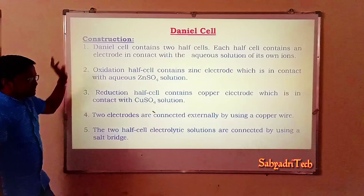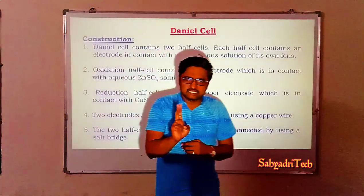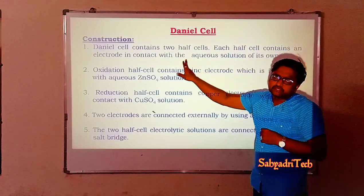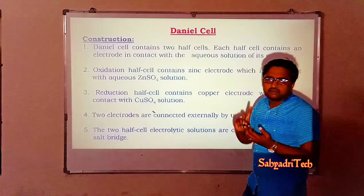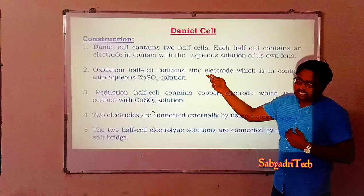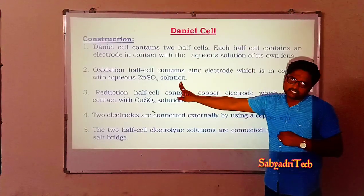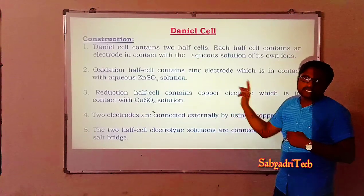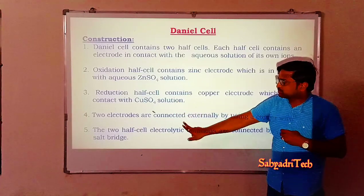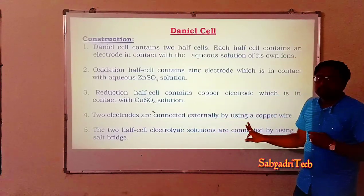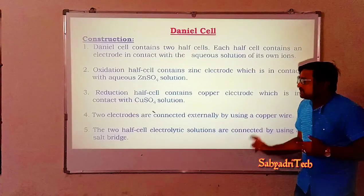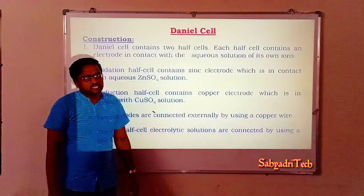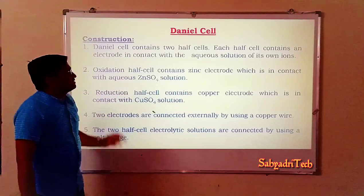To summarize the construction: (1) The Daniel cell consists of two half cells, each containing an electrode in contact with the solution of its own ions. (2) The oxidation half cell contains a zinc electrode in contact with aqueous zinc sulfate. (3) The reduction half cell contains a copper electrode in contact with aqueous copper sulfate. (4) Both electrodes are connected externally via copper wire to a voltmeter. (5) Both electrolytic solutions are connected by a salt bridge.